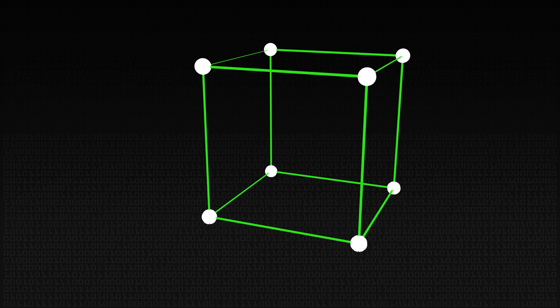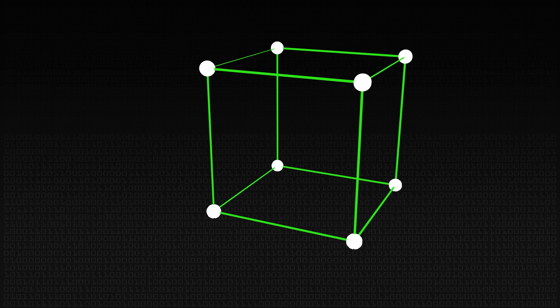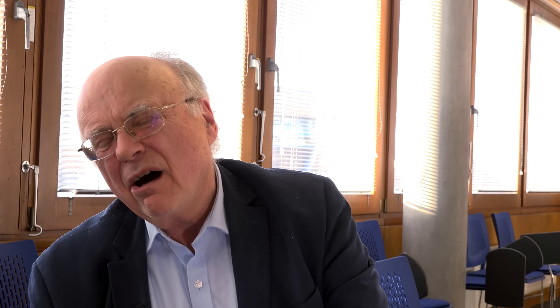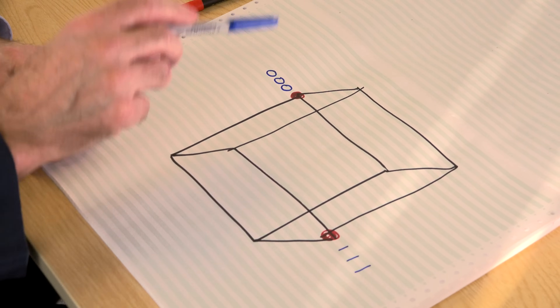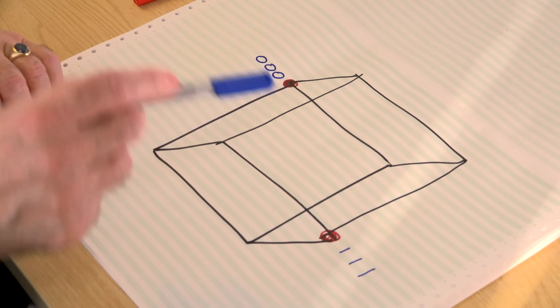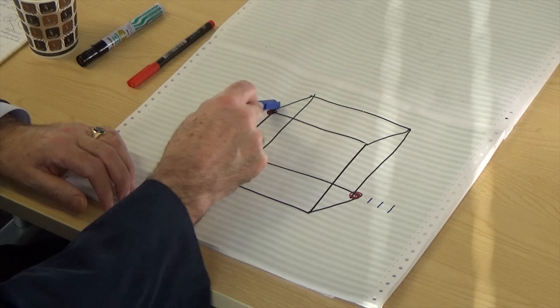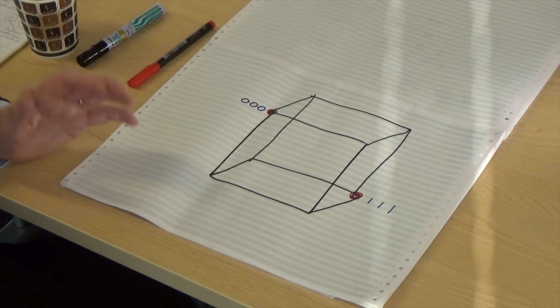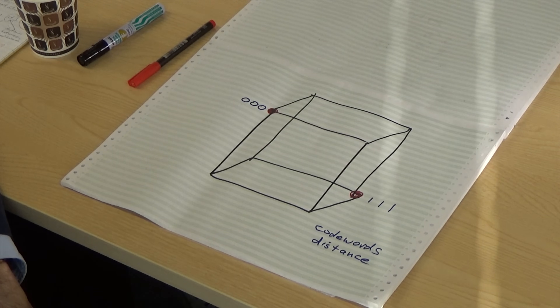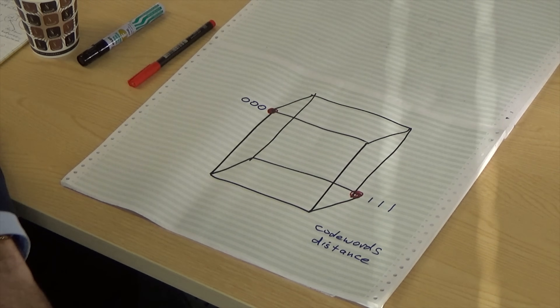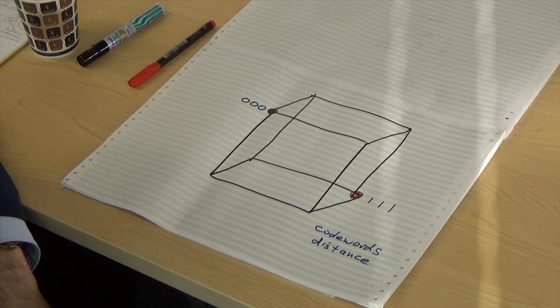What you're saying is if you send three zeros that's fine, if you send three ones and they don't get corrupted that's fine. Just look how far away they are from each other. It doesn't matter how you get from there to there — backwards you have to go one, two, three. So that's technically called the distance between these two code words. Two buzz phrases straight away: code words, and distance between them.